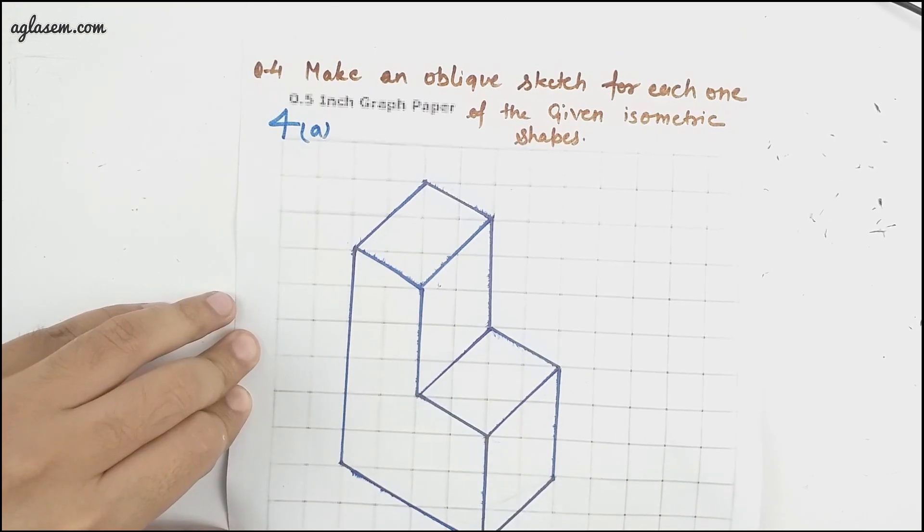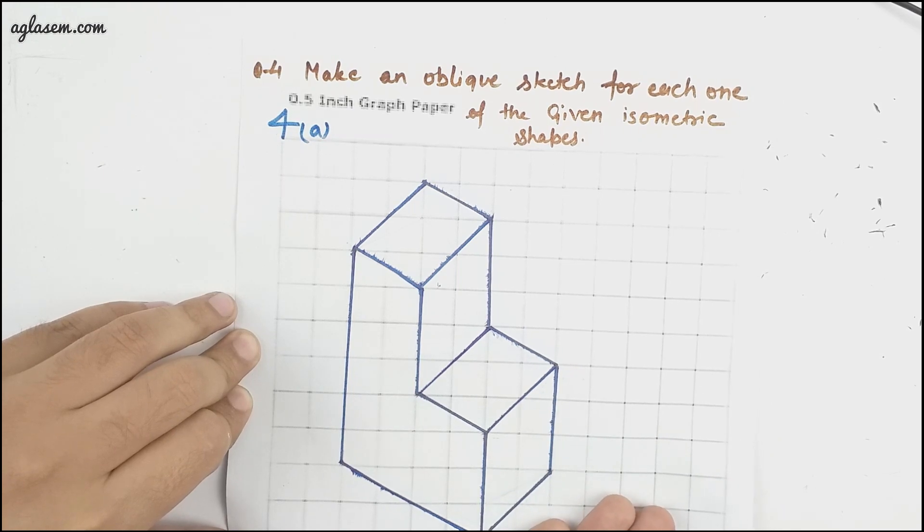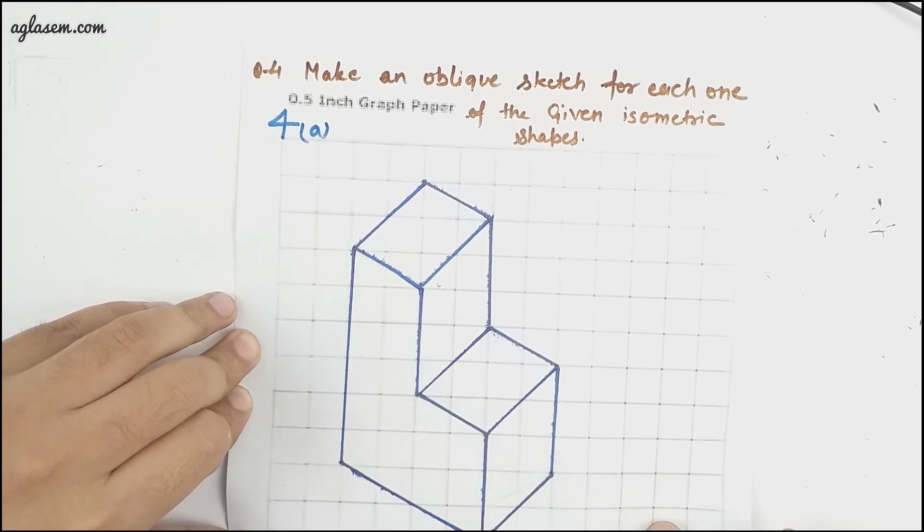Now coming to question number four, we have to make an oblique sketch for each one of the given isometric shapes. So it's very simple. First one I have drawn for you. Second one will look like this. So this is done.